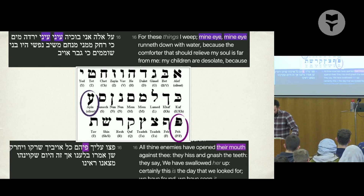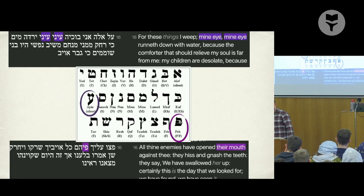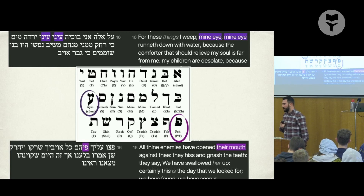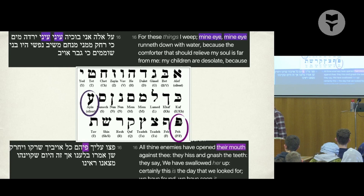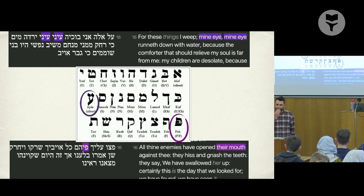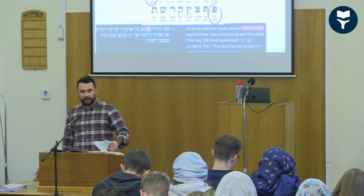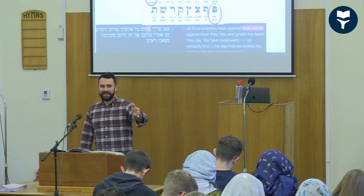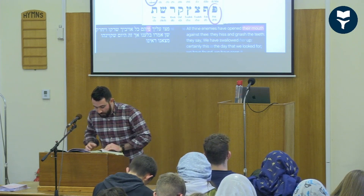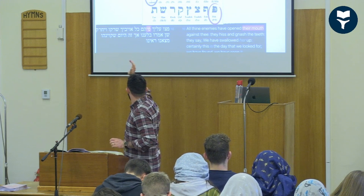We know in Lamentations that in chapters two, three, and four, the alphabetical structure breaks down. But does anyone know a chapter in the Bible where there is a perfect acrostic poem? Psalm 119 — well done. Let's go there, because in Psalm 119 we have a perfect acrostic poem like Lamentations chapter one, with no break — the full alphabet from Aleph to Tav.